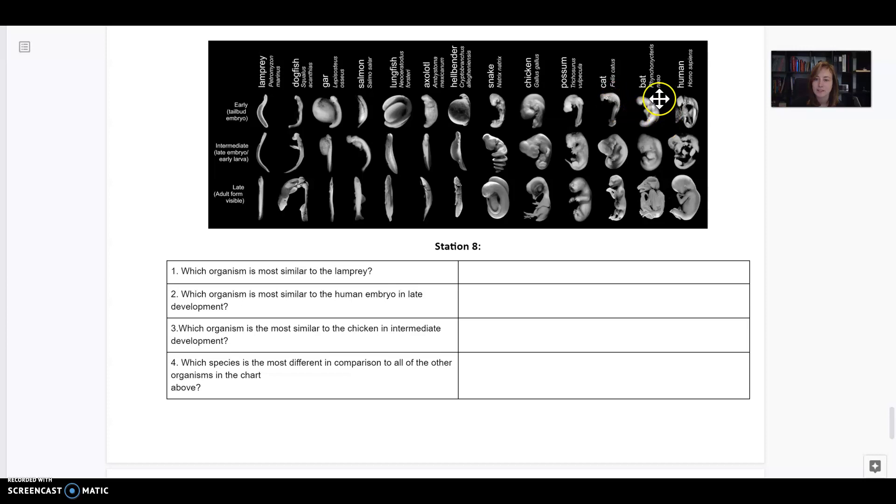Same with the bat. I would have no idea that that was going to become a bat if I didn't see it labeled. Same with the human. So they're all really similar to begin with. And that is evidence of evolution. Now, later on, they start to become different. Like look at this chicken, it actually looks a little more like a chicken now than it did before. So this is evidence of evolution because they all look so similar to begin with.